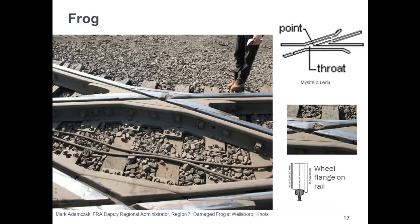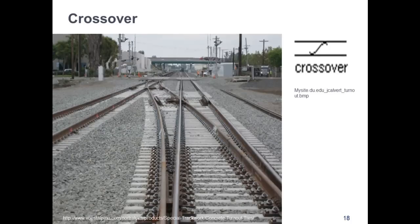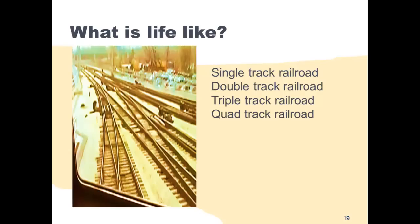Moving on to frog: the frog provides support for the wheels and a way through for the wheel flanges. Are frogs considered special track? Yes, they are custom built, cast of manganese steel — a very strong, high-quality steel. In the case of a frog at a diamond crossing, they are calculated not only in degrees but minutes and actually seconds of an arc. A crossover connects two tracks. Crossovers are used to connect double-track mains or a mainline and long passing tracks. We will go over typical distances between crossovers on double-track mains later.